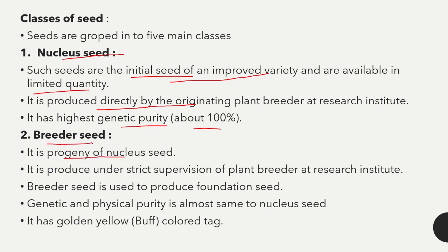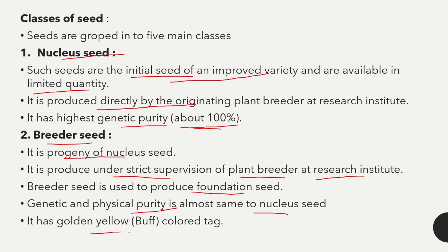Second is breeder seed — produced under strict supervision of plant breeders at the research institute. Breeder seed is used to produce foundation seed. Its genetic and physical purity is almost the same as nucleus seed — nearly 100 percent. It has a golden yellow color tag. Both breeder seed and nucleus seed are made at research institutes.